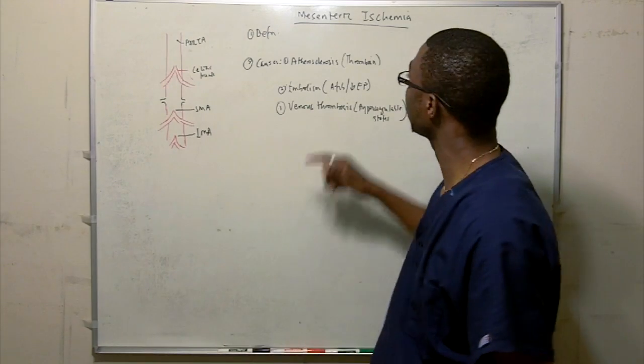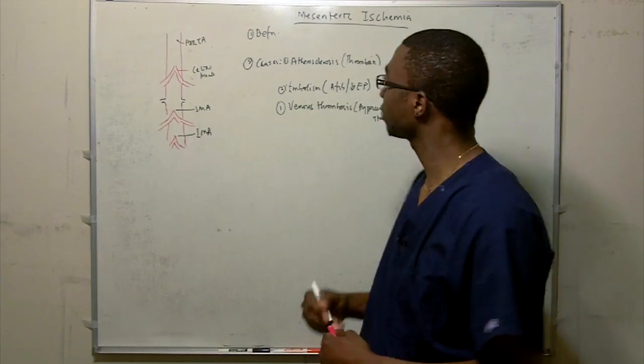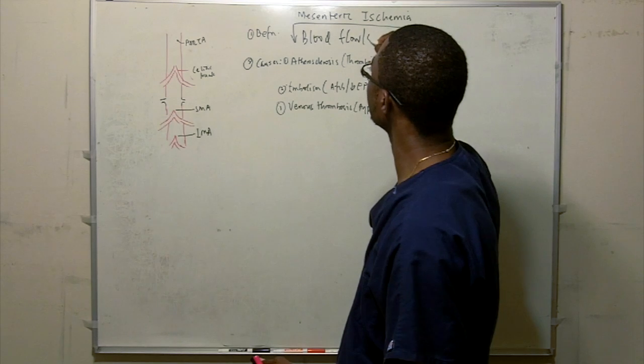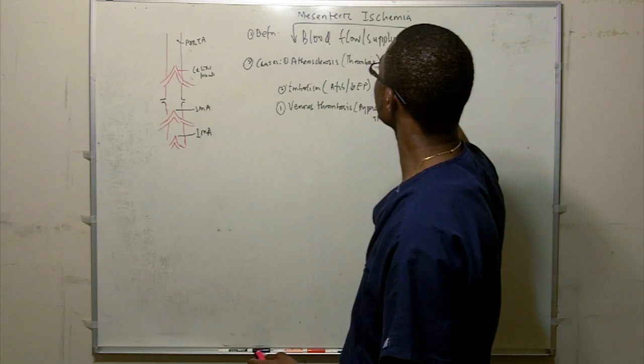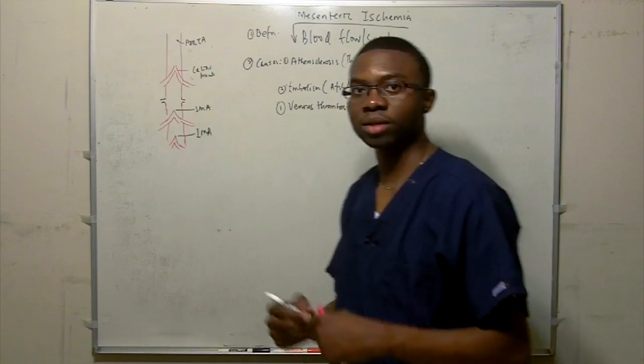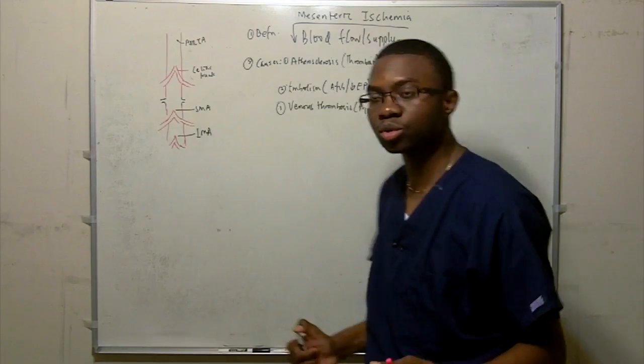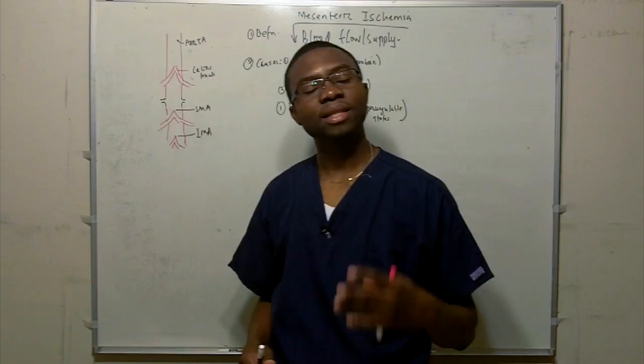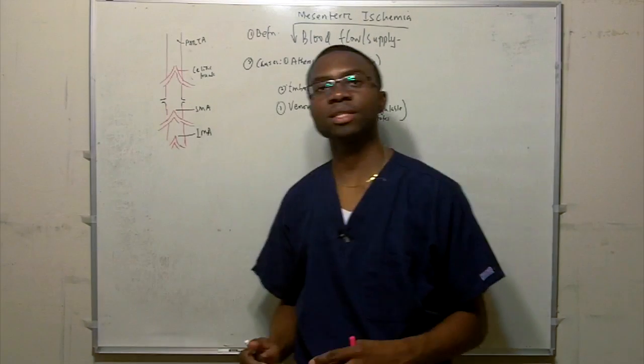We're going to talk about anatomy in a minute. Ischemia, which means decreased blood flow or blood supply. So you've learned about ischemia all this long in medical school, nursing school. Ischemia to the mesenteric arteries is what's causing mesenteric ischemia.